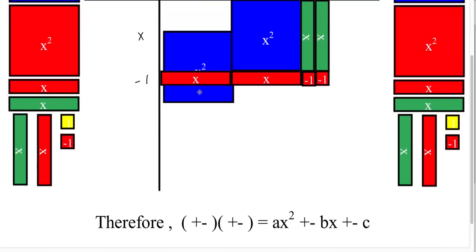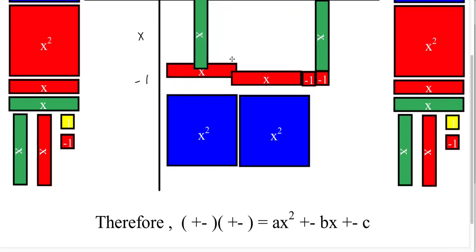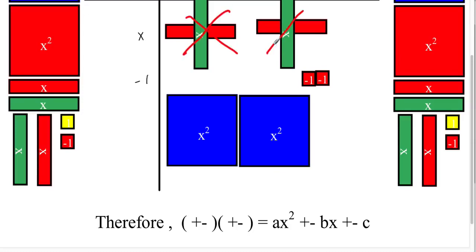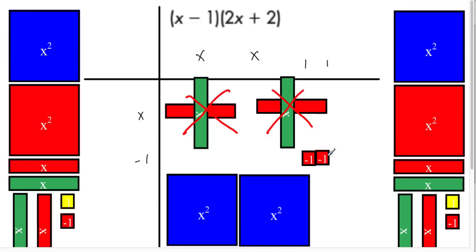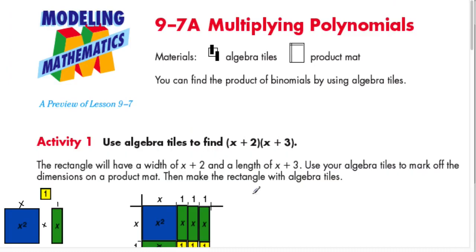This forms our rectangle for (x−1)(2x+2). We have two x-tiles here, but these two green tiles form a zero pair and cancel out. Those go away because there is a zero pair. We are left with two x² tiles and two negative unit tiles, giving us 2x² − 2.